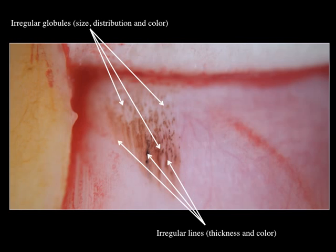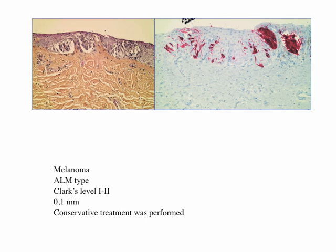This was an irregular lines and globule pattern — a malignant pattern observed in melanoma. Surgical excision confirmed acral lentiginous melanoma in a 12-year-old girl. Fortunately, the Breslow thickness was very small at 0.1 millimeters, and we could perform conservative treatment with no amputation of the right thumb.